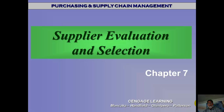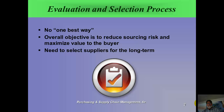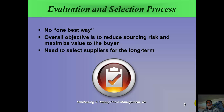Hello class. Here we are with supplier evaluation and selection, which is the topic of chapter 7. There's no one best way to evaluate and select your suppliers. What you're trying to do is reduce buying risk or sourcing risk, and yet maximize value to your organization — increasing the upside and decreasing the downside.